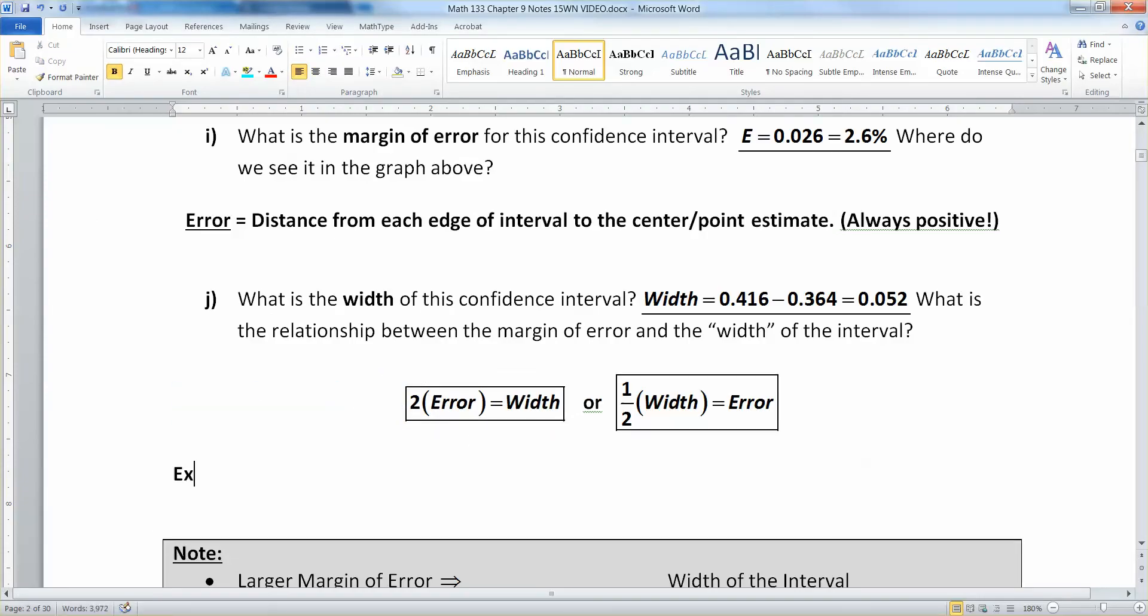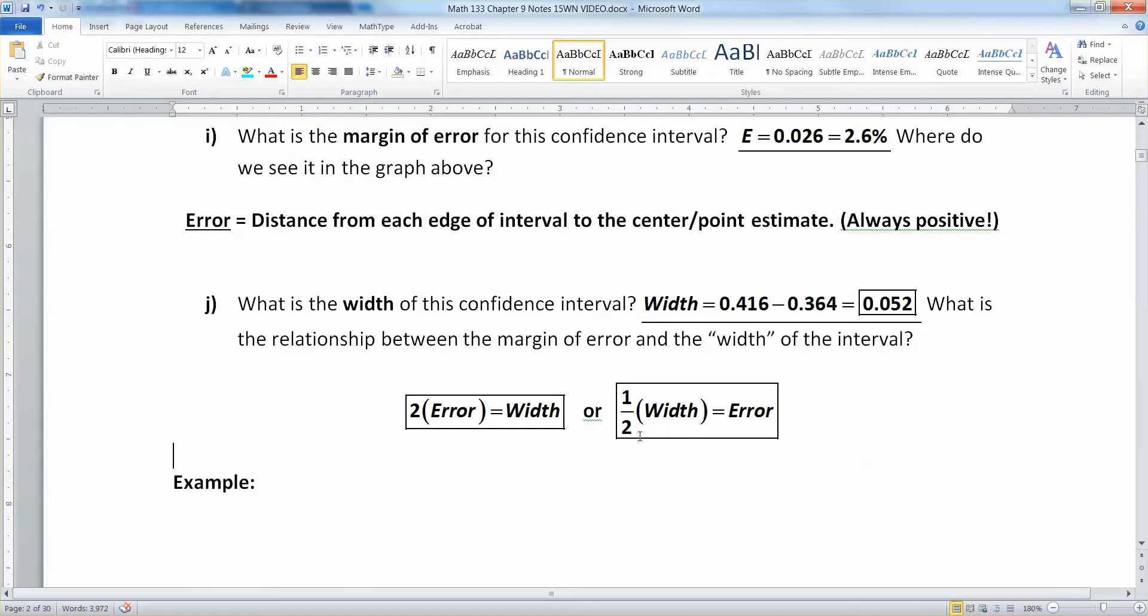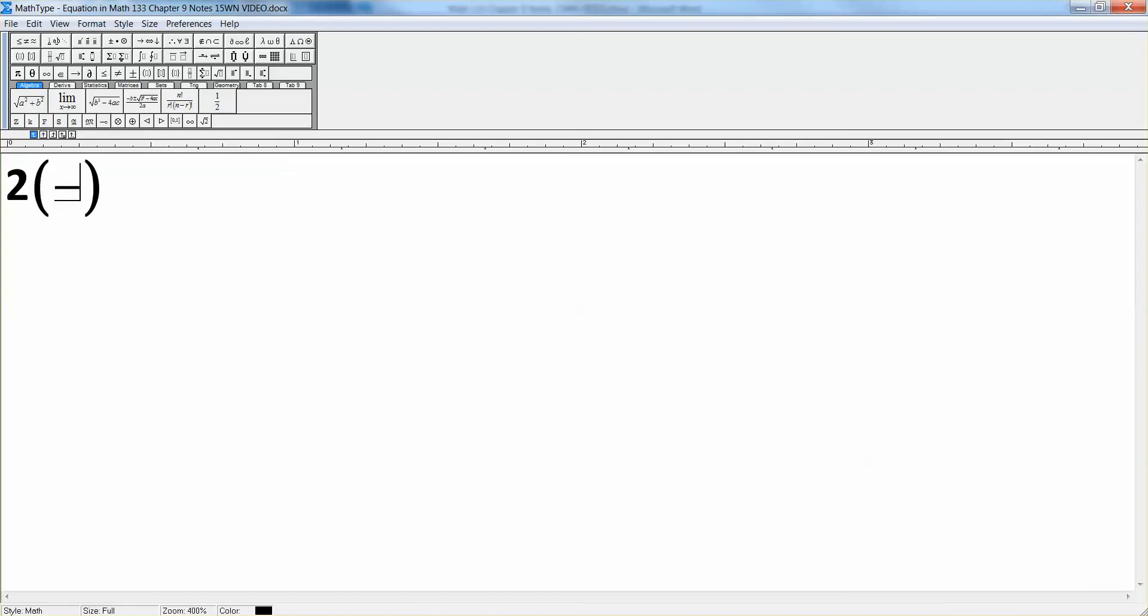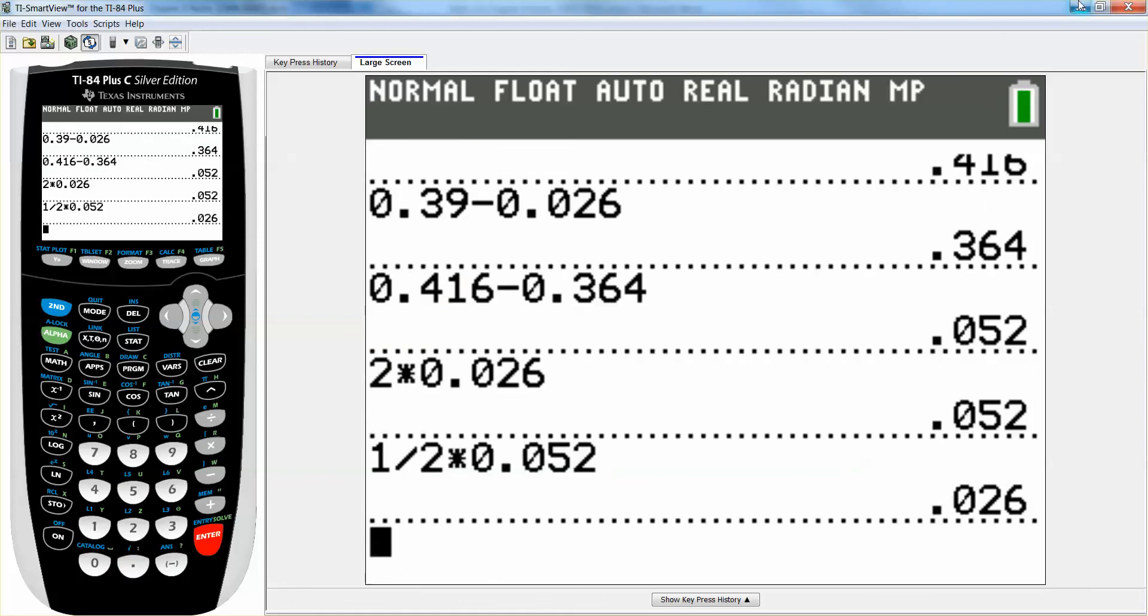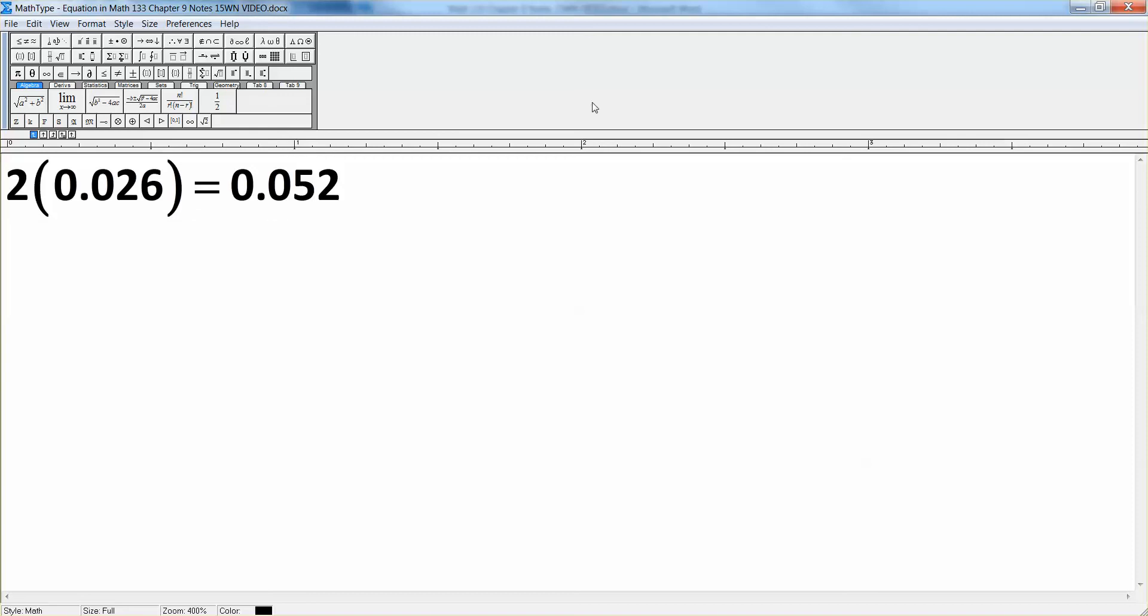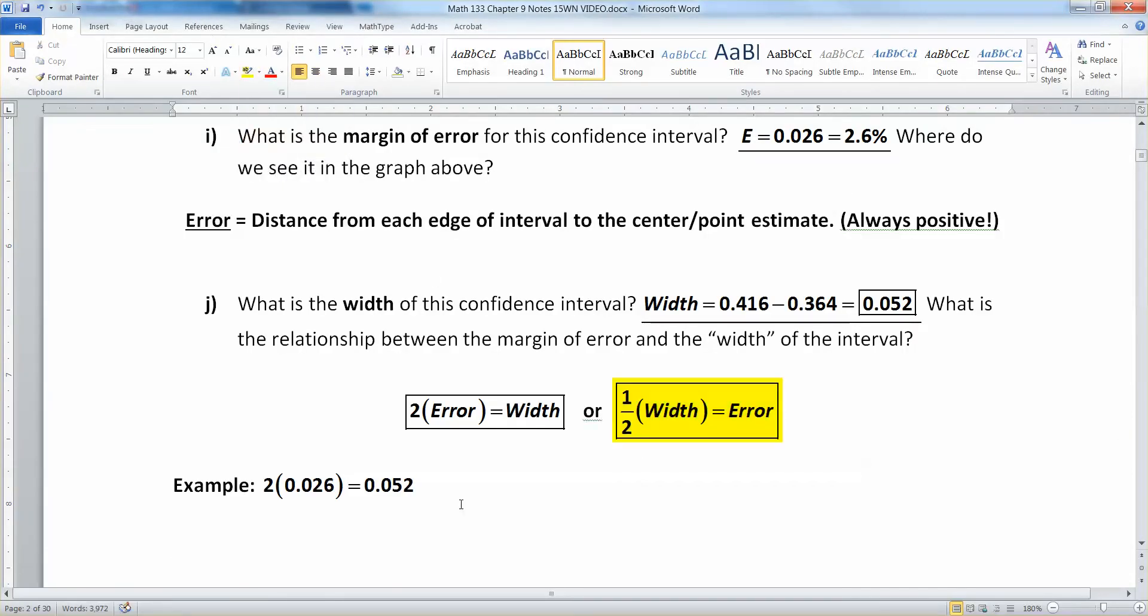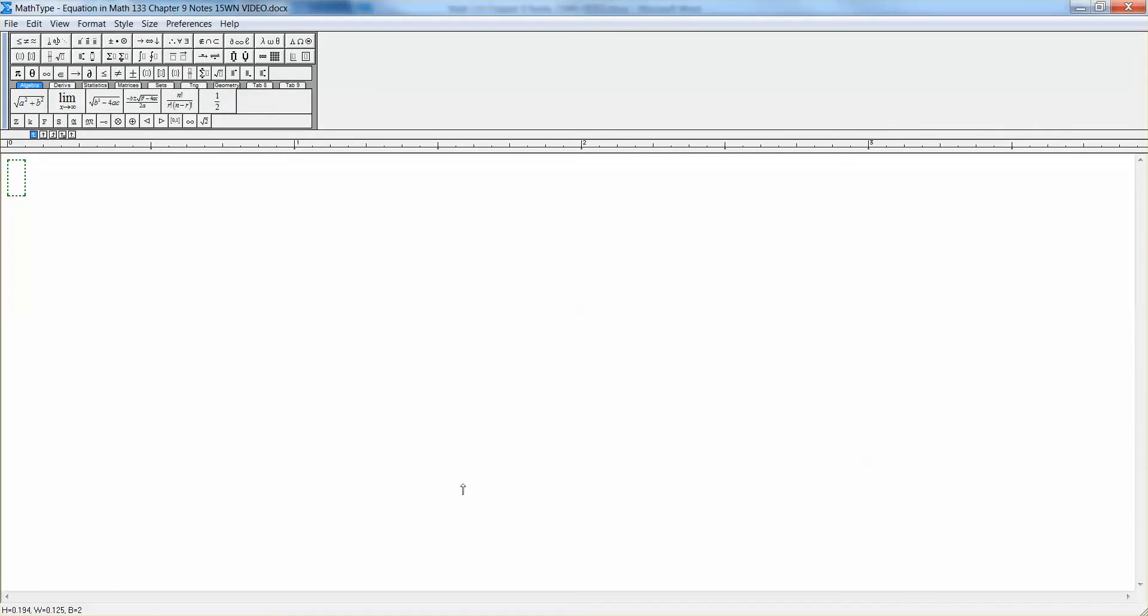Now let me prove it to you in our example. In our example, the width was 0.052. You can see it right here. There's the width. But what's the error? The error was 0.026. So take two times 0.026. And what do you have? Two times 0.026. Lo and behold, you have 0.052. Or if in other words, if you take one half times 0.052, you're going to get 0.026. So either way you want to think about it, it's 0.052. We tend to use this one on the right more often. Not that the other one's wrong. It's just that's the one we use more often. So in our example, it was 2 times 0.026 is 0.052. Or you could think of it as a half of 0.052 is equal to 0.026, which is the error.